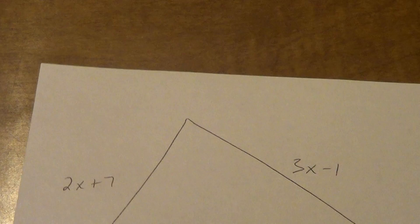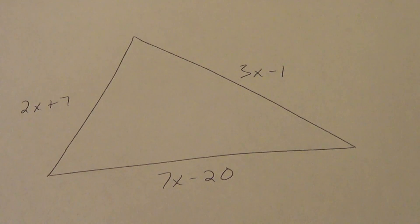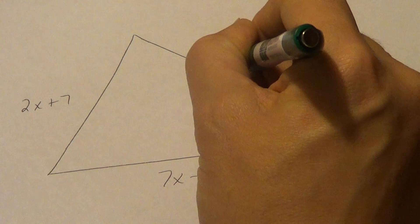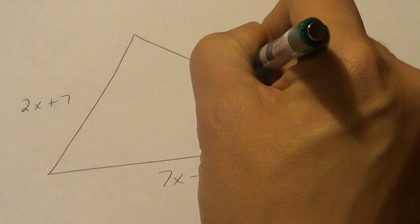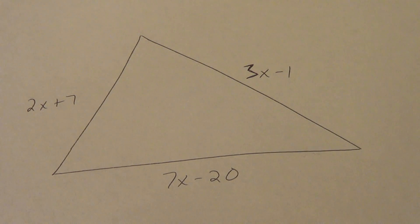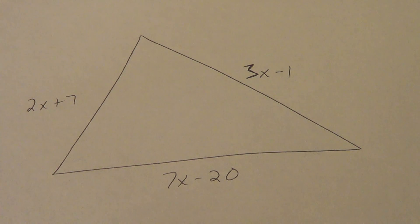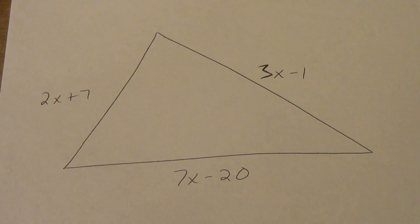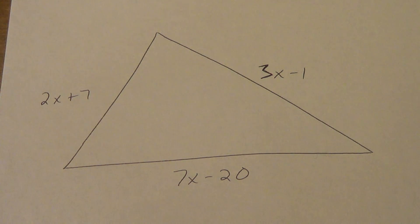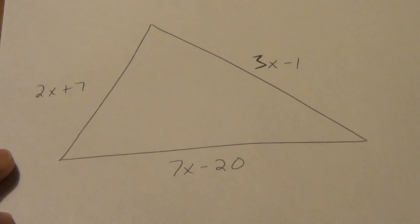Next one's a little harder — more of an honors-type question. CP students, you probably won't ever see this and it won't be on your video quiz or regular quiz. Honors kids, you definitely need to know how to do this. We do the same exact thing as before — add two sides together, they're greater than the third side — but now we've got x's all over the place. You're going to come up with three different inequalities to work with.